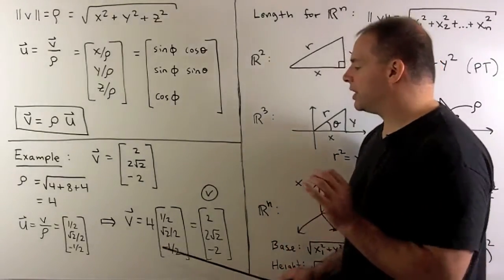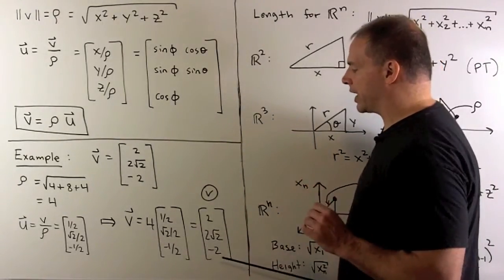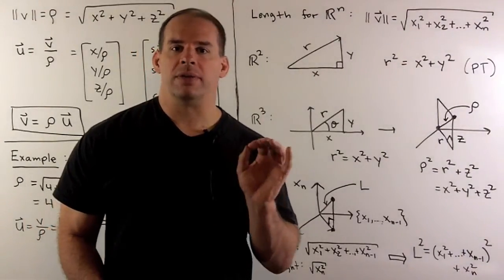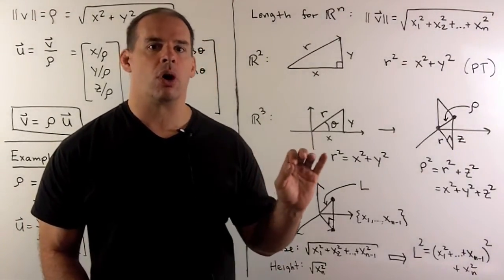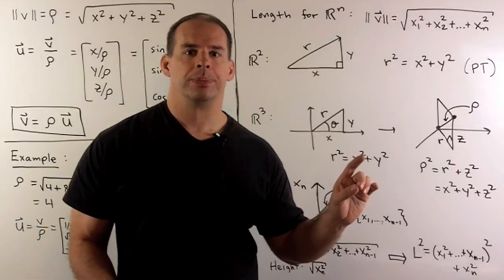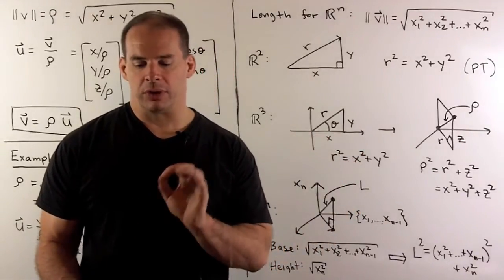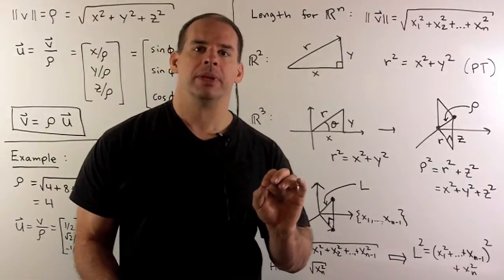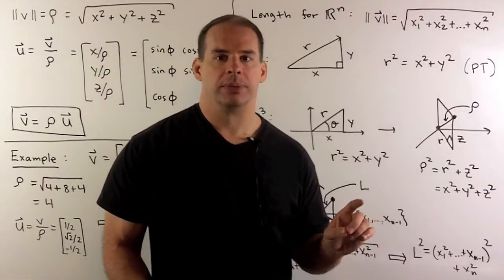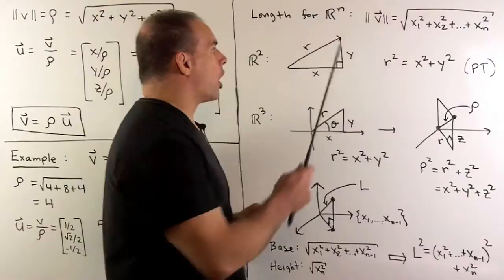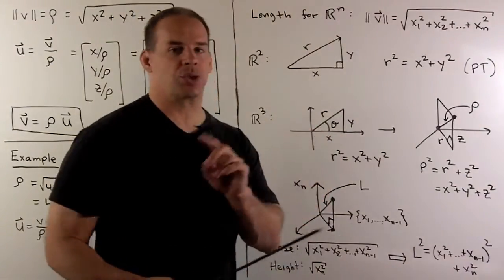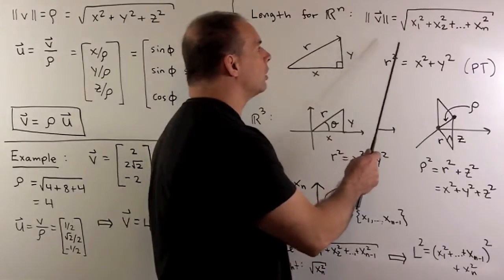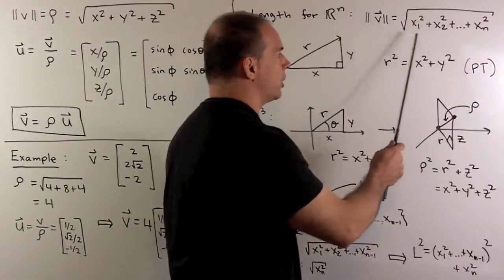Our factorization also checks out. Now, how do we define lengths for vectors in R4, R5, and so on? We look at our definition for length for R1, R2, R3, and extend naturally. If we have a vector v in Rn with coordinates x₁ through xₙ, then the length of v is given by the square root of the sum of the squares of the coordinates.